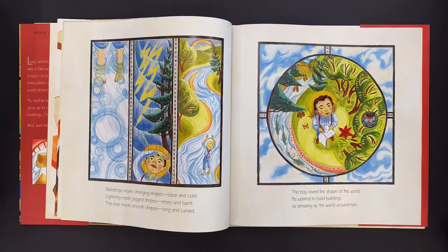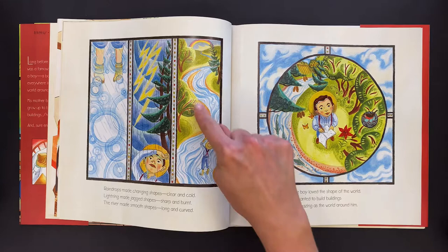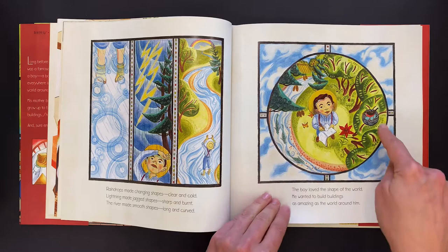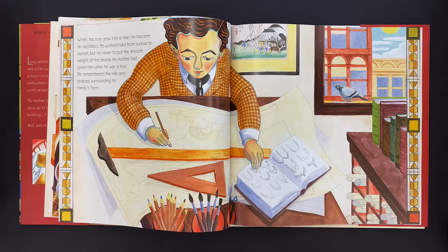Raindrops made changing shapes. Clear and cold lightning made jagged shapes, sharp and burnt. The river made smooth shapes, long and curved. The boy loved the shapes of the world. He wanted to build buildings. I wonder what this looks like. It kind of looks like a stained glass window.